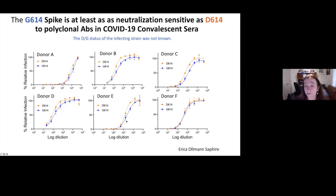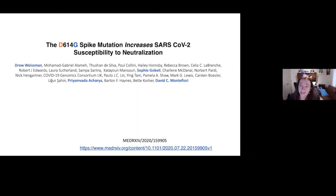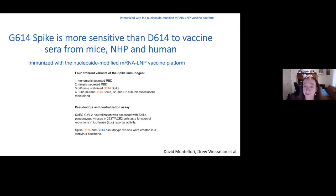Erica also showed at the time we published our cell paper that G614 spike was at least as neutralization sensitive as D614. She only had a handful of sera, convalescent sera from San Diego. There seemed to be a slight shift where G is more sensitive, so shift to the right is more sensitive, but this is just a few patients. We couldn't really say for sure.